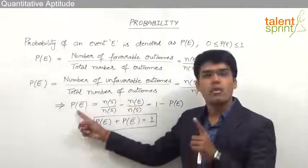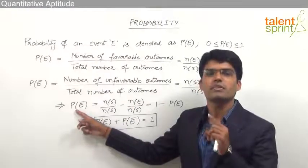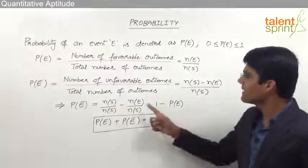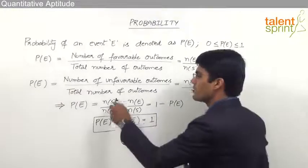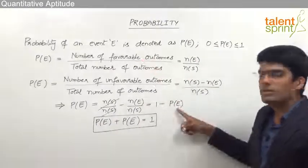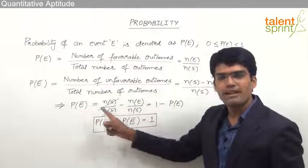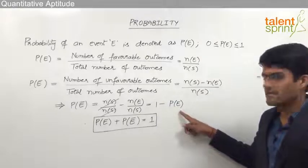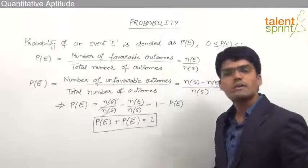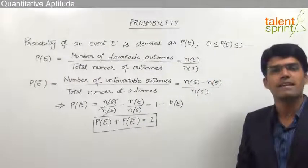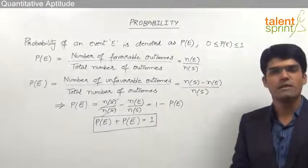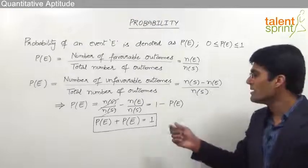When we simplify, the probability of failure equals N(S)/N(S) minus N(E)/N(S). N(S)/N(S) cancels to 1, and N(E)/N(S) is nothing but the probability of the event to happen. So the probability of failure equals 1 minus the probability of success. Therefore, probability of success plus probability of failure is always equal to 1.